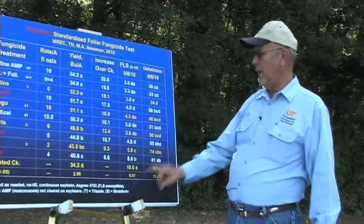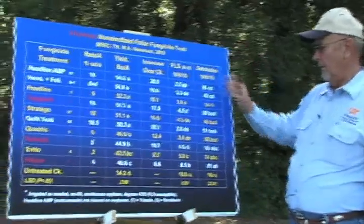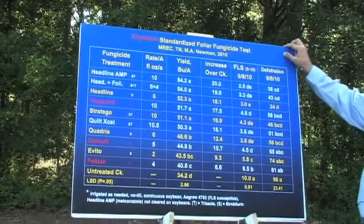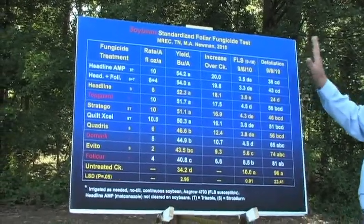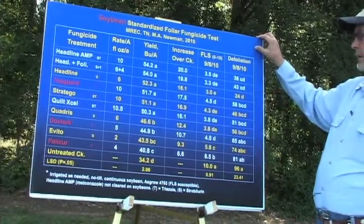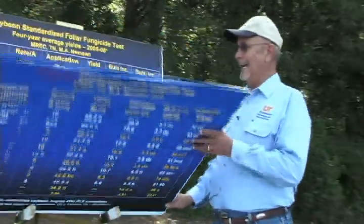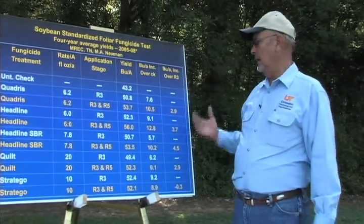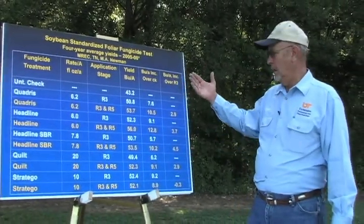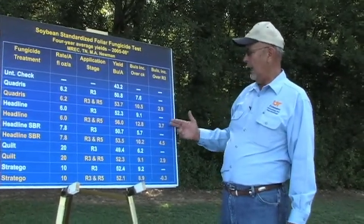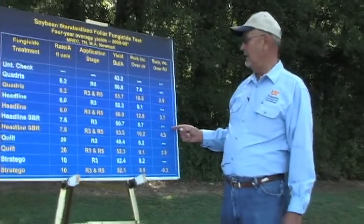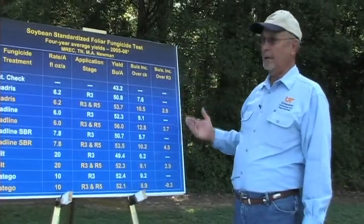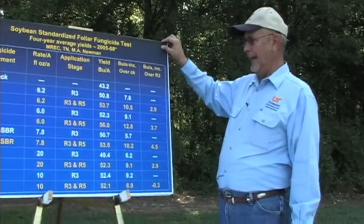You can see the rating of the diseases from 10 being the worst down to about 3.3 — these are very good results. Now, we never get rid of all the disease with just one application at R3. Sometimes producers ask if they need a second application. Most of the time not, but in severe cases we have seen some increase over one application. So that can be done — it is cleared.